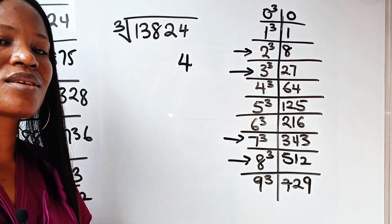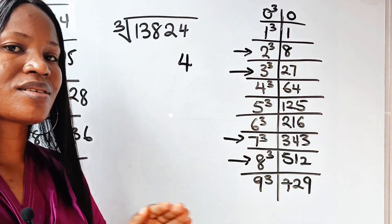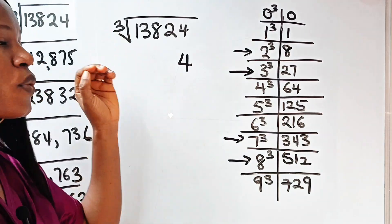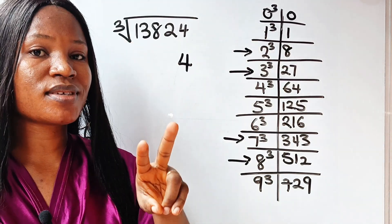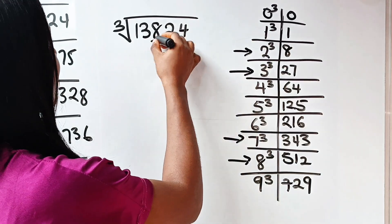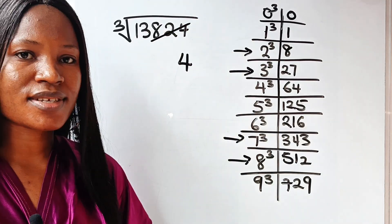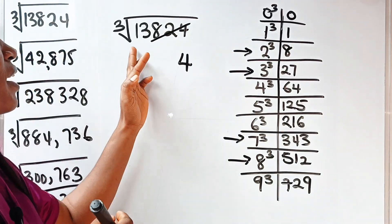Do you understand? So what this actually implies is what number cubed will give you a number that ends with 4, and that number is 4 as well. So I will write 4. Then, I'm going to cancel the last 3 digits. This is cube root, so we go with 3. If this is square, we cancel the last 2 digits. So I'm going to cancel the last 3 digits.